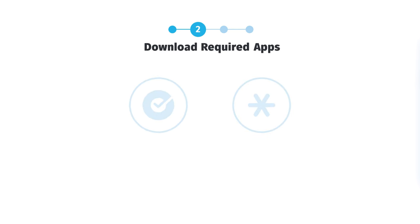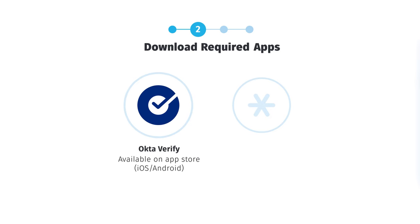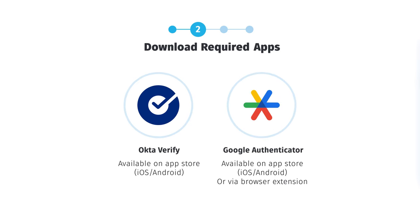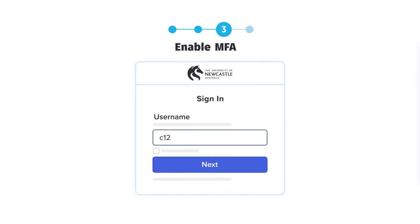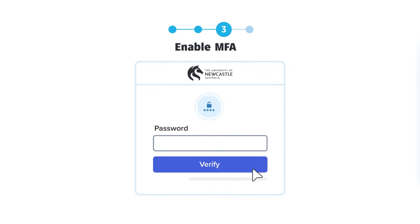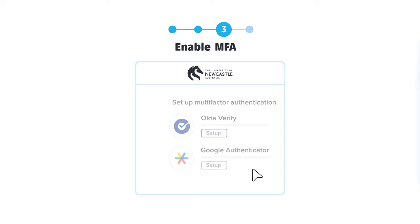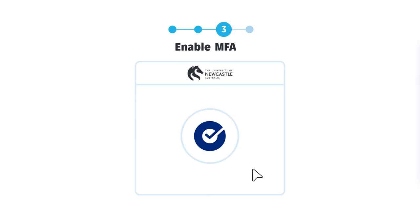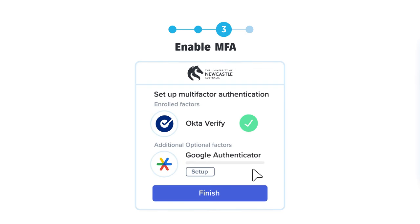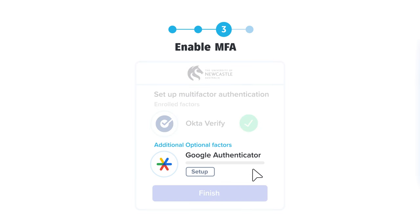Once you have chosen your method, download the required applications from your device's app store. The Google Authenticator extension can be added through your web browser. Once MFA has been made mandatory for your account, you will be prompted to enable your chosen method when logging in. Click Setup for your authentication method and follow the prompts — OctoVerify is being used here as an example. You will be able to see that your chosen method is enrolled. We recommend adding additional optional factors for a more convenient and secure experience.